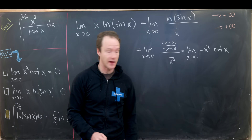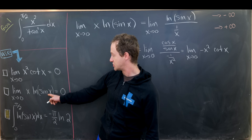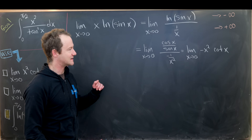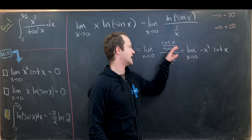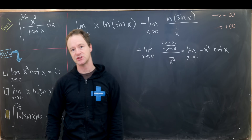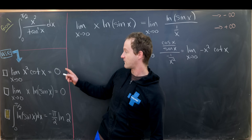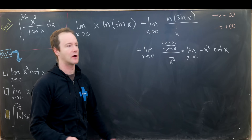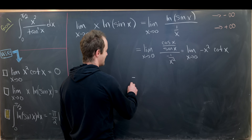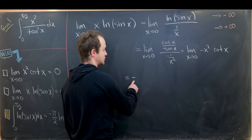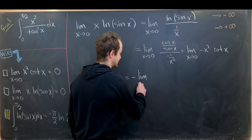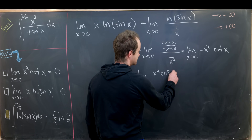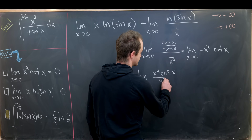If we prove this limit equals 0 we will also achieve the second limit. I'll put it back in terms of cosines and sines to evaluate more carefully, pulling the minus sign out: minus the limit as x→0 of x²·cos(x)/sin(x).